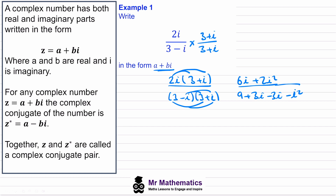The positive 3i and the negative 3i cancel. We have an i squared term in both numerator and denominator, and since i squared equals negative 1, we substitute that back in: we get 6i plus 2 times negative 1, over 9 minus negative 1.